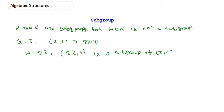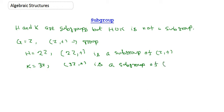Similarly, let K = 3Z. You can verify that 3Z is also a subgroup of Z+. In general, for any integer M, MZ is a subgroup of Z+. So here 2Z is a subgroup of Z+ and 3Z is a subgroup of Z+.